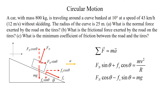Let's do a numerical example. A car of mass 800 kg travels around a curve banked at 10 degrees at a speed of 43 km/h, which is 12 m/s, without skidding. The radius of the curve is 25 meters. Part A: What is the normal force exerted by the road on the tires? Part B: What is the frictional force? Part C: What is the minimum coefficient of friction so we don't skid? This is an application of the previous equations.